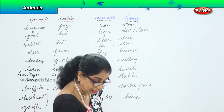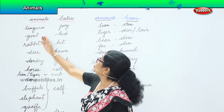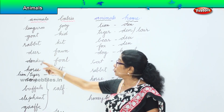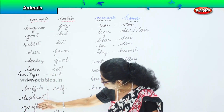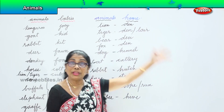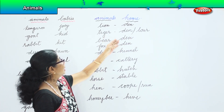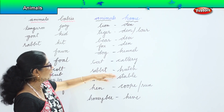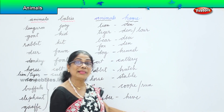Let's review. Animals and their babies: baby kangaroo is a joey, baby goat is a kid, baby rabbit is a kit, baby deer is a fawn, baby donkey is a foal, baby horse is a colt, lion and tiger babies are cubs, cow, buffalo, elephant, and giraffe babies are calves, and baby fish is called a fry. Animals and their homes: lion in a den, tiger in a den or lair, bear in a den, fox in a den, dog in a kennel, cat in a cat tree, rabbit in a hutch, horse in a stable, hen in a coop or run, and honeybee in a beehive.